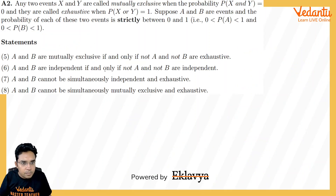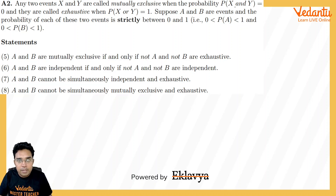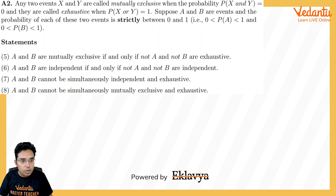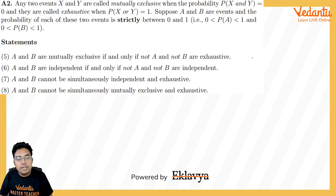Coming to the second question: any two events X and Y are called mutually exclusive when P(X ∩ Y) = 0, and called exhaustive when P(X ∪ Y) = 1. Suppose A and B are events with probability of each strictly between 0 and 1. Statement: A and B are mutually exclusive if and only if not-A and not-B are exhaustive. This is a direct consequence of De Morgan's law.